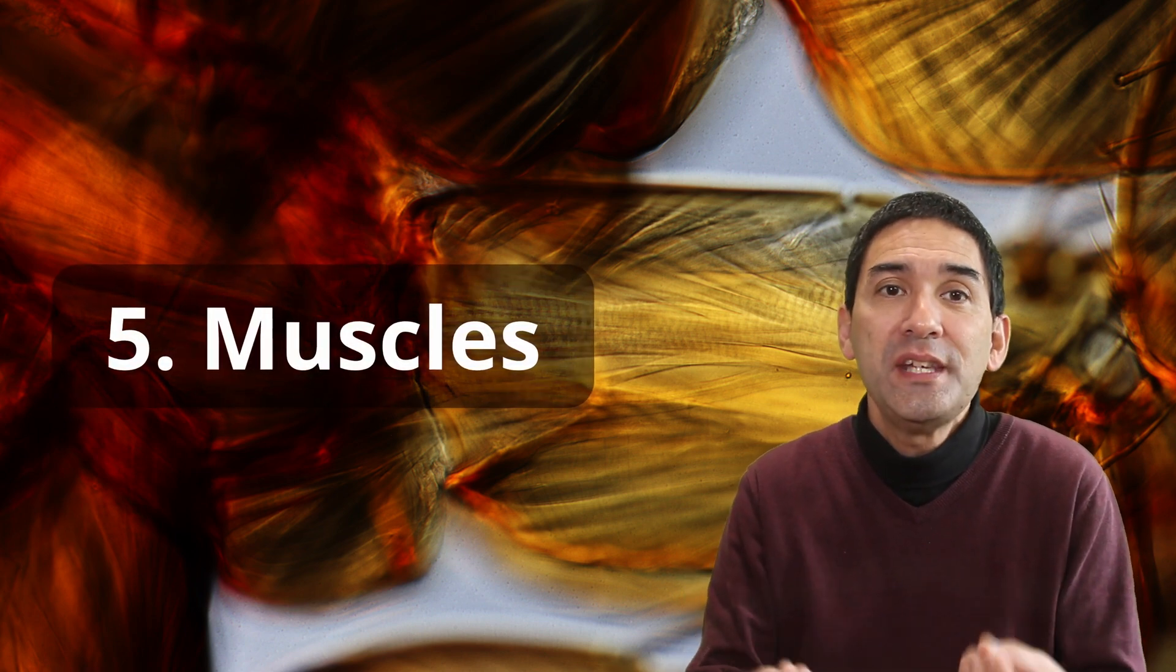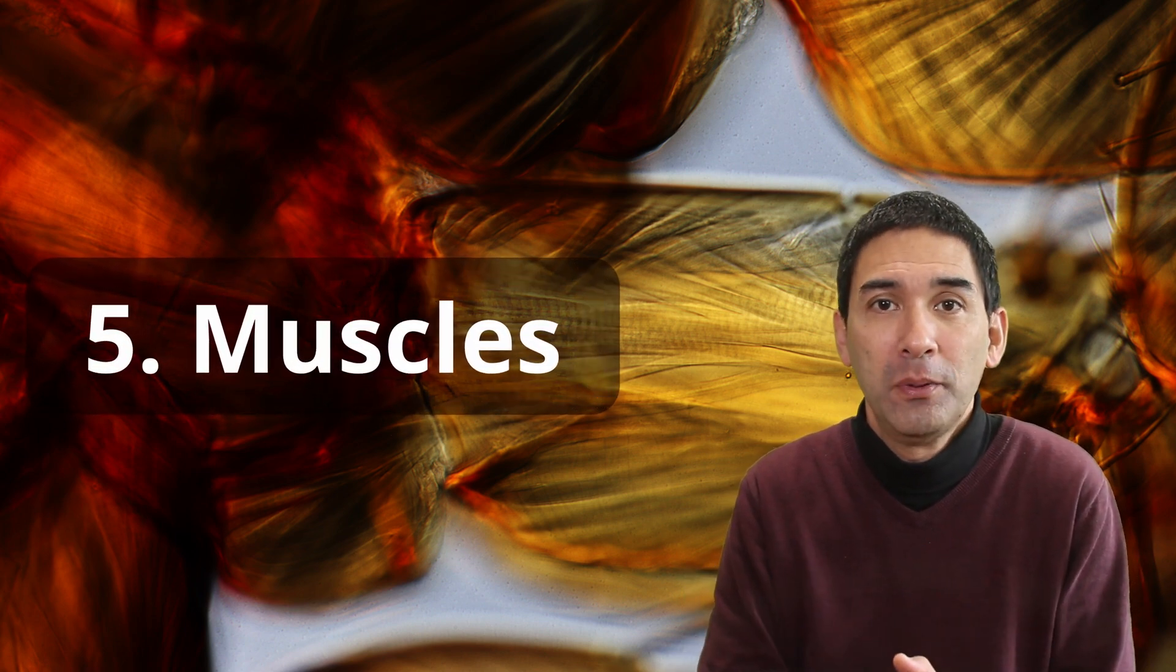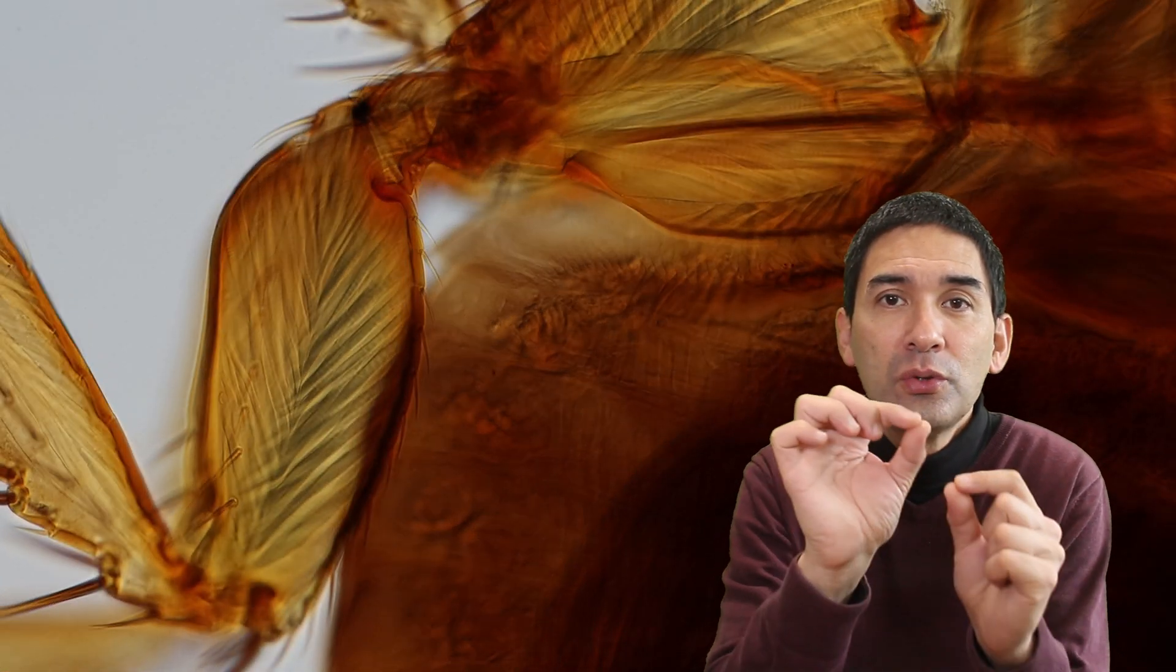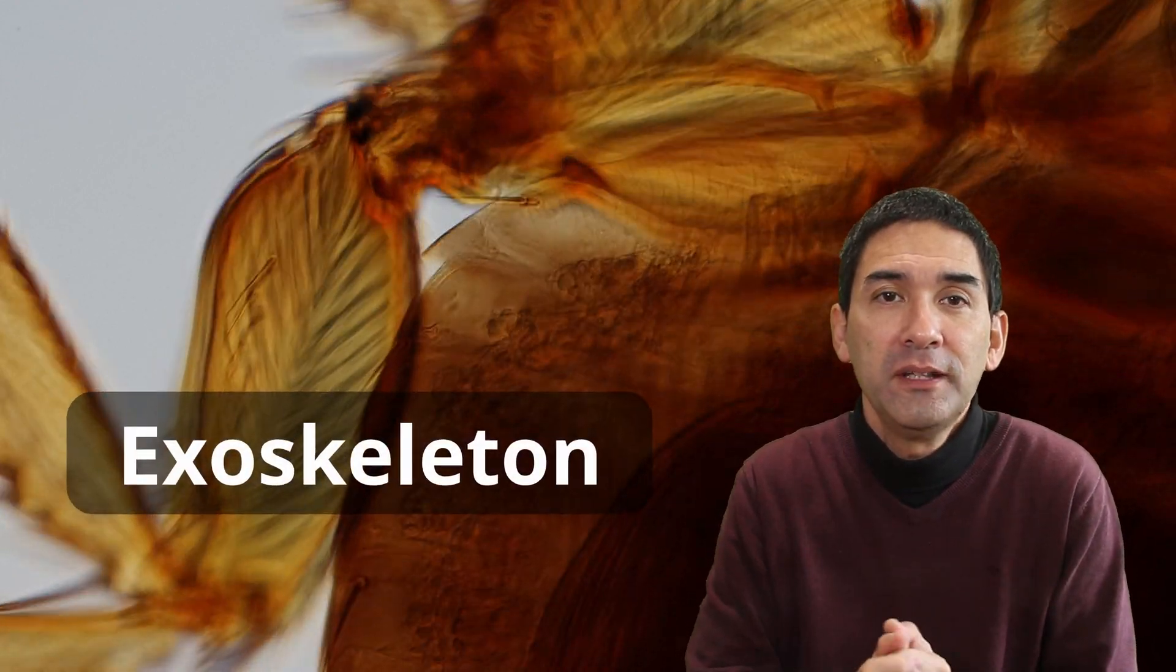First of all, fleas have a lot of muscles and we're able to see these muscles under the microscope. Fleas have to be relatively strong and we can actually see those muscles by looking into the flea itself. The muscles are attached to the inside of the exoskeleton of the flea.